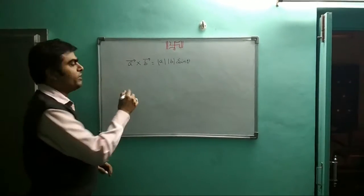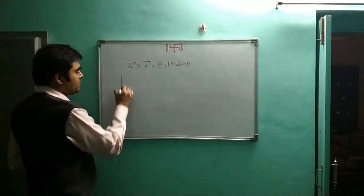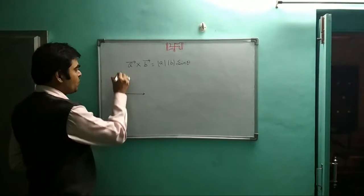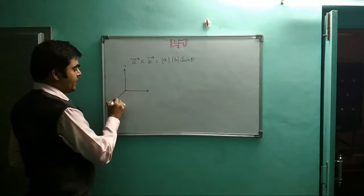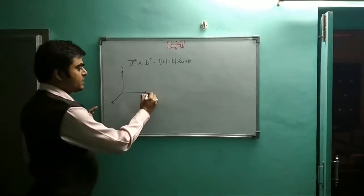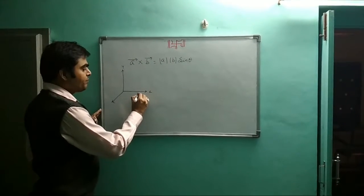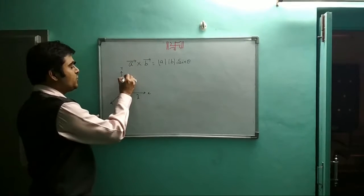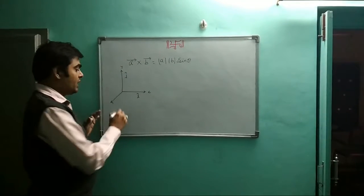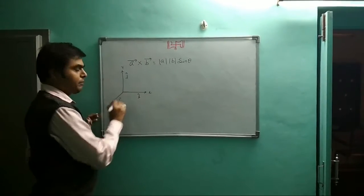Today's topic is unit vectors. Suppose we have x, y, and z. x is the unit vector i cap, y is the unit vector j cap, and z is the unit vector k cap.